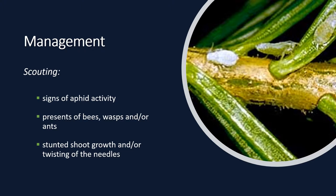So what can you do to manage this pest? Scouting would be a good idea if you suspect aphids. If the trees are showing signs of aphid activity, you will notice a high presence of bees, wasps, and/or ants, as they feed on the sugary secretion — honeydew. You may also see stunted shoot growth and/or twisting of the needles, or possibly a yellowing of the needles as well.